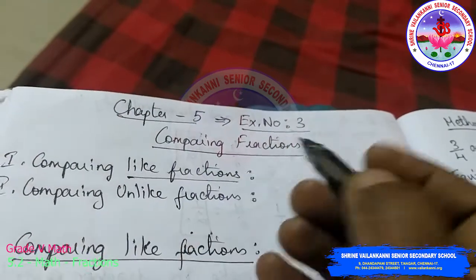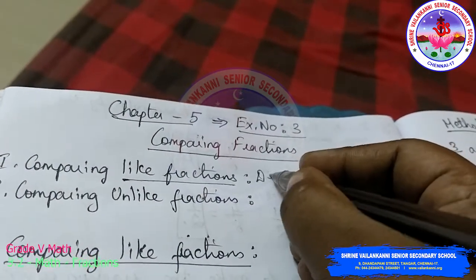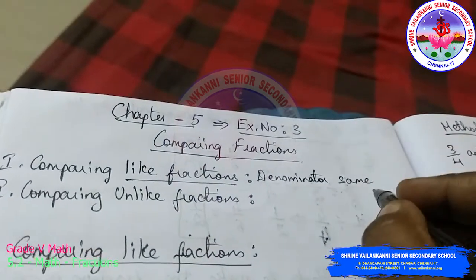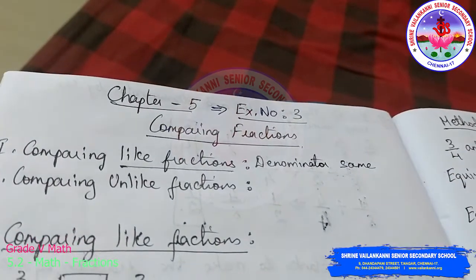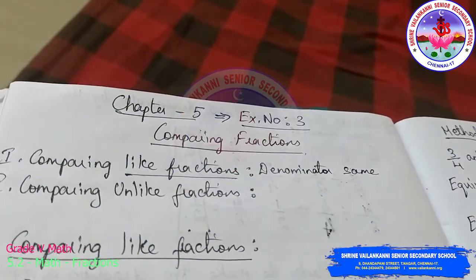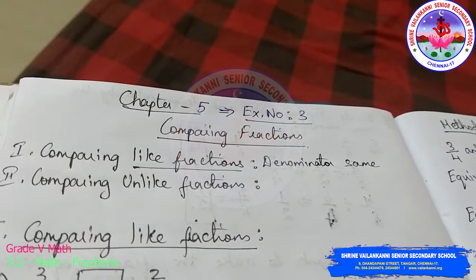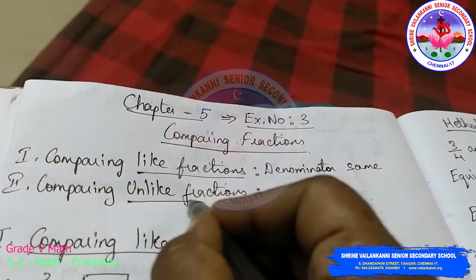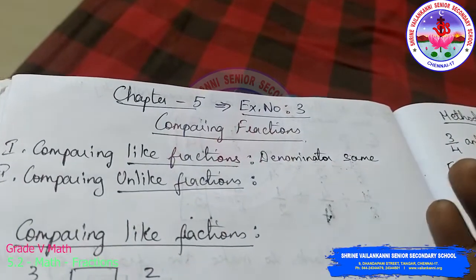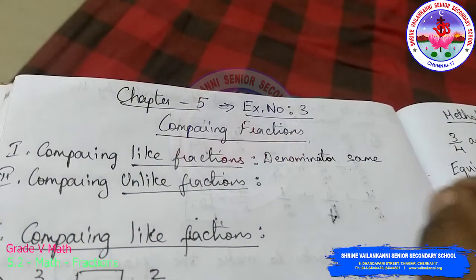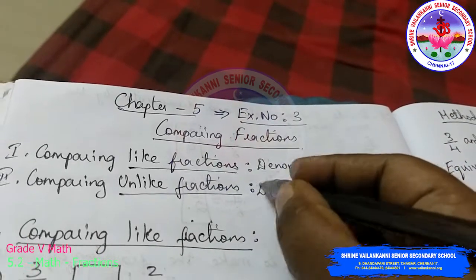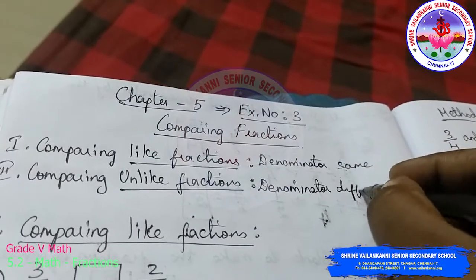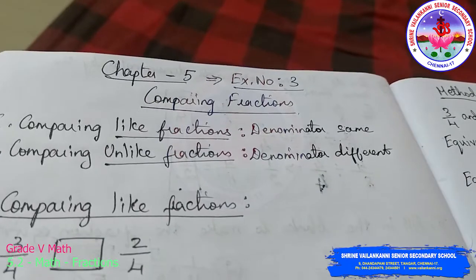Like fractions means fractions which have the same denominator. Whichever fractions — two fractions or more — all the denominators will be same. When all the denominators of the fractions are same, you treat it as a like fraction. When two or more fractions are given and all the denominators are different, you treat it as an unlike fraction.